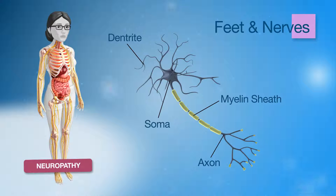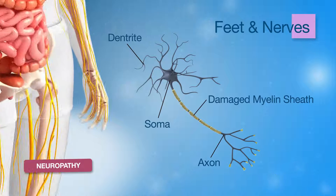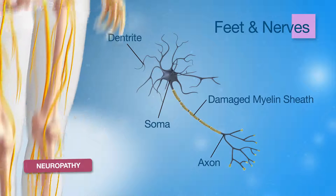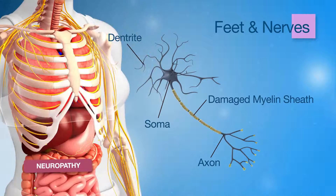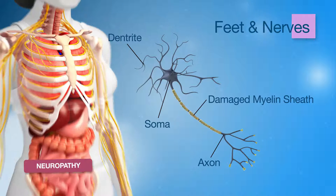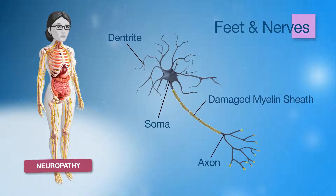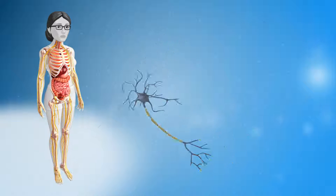High blood glucose levels can damage the nerve fibre, leading to nerve damage that can occur anywhere in the body, including the nerves in your hands, lower limbs, feet, and the nerves which regulate internal organs including the stomach, bladder, ears and sexual organs. Nerve damage in your hands, lower limbs and feet can result in numbness and loss of sensation, pins and needles, and feelings of pain, burning and freezing.